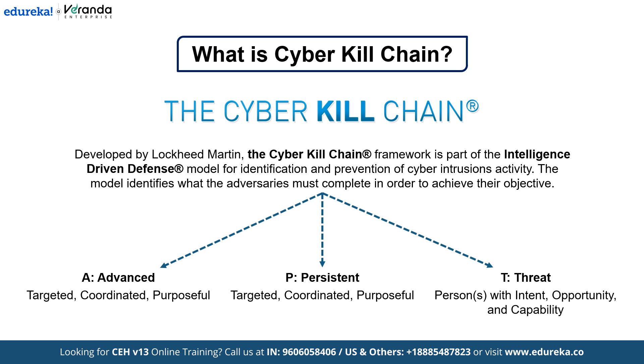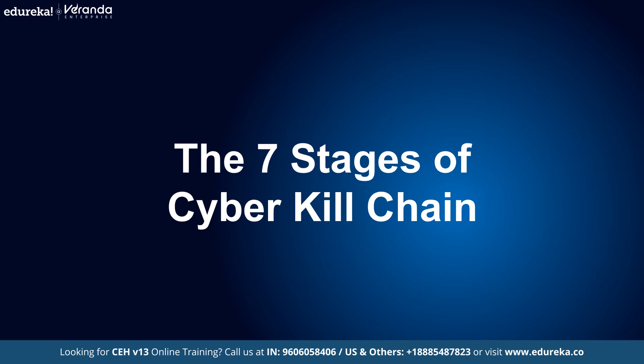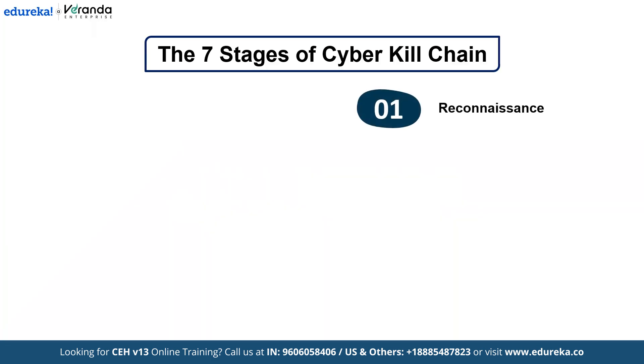Let's break down the 7 stages of the cyber kill chain and see what happens at each stage, as each stage plays a critical role in an attack. Stage 1 is Reconnaissance: attackers gather information about the target, including collecting publicly available data, scanning for vulnerabilities with tools, and identifying potential entry points.